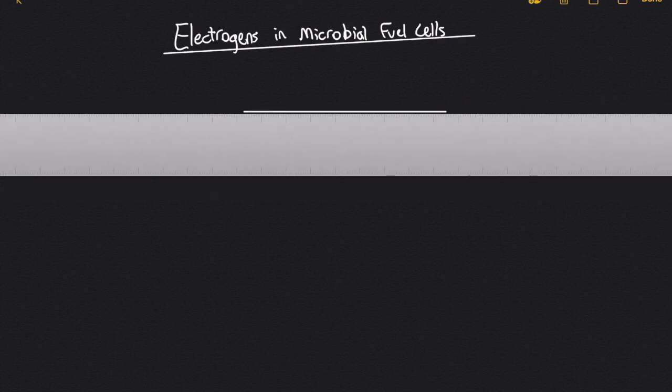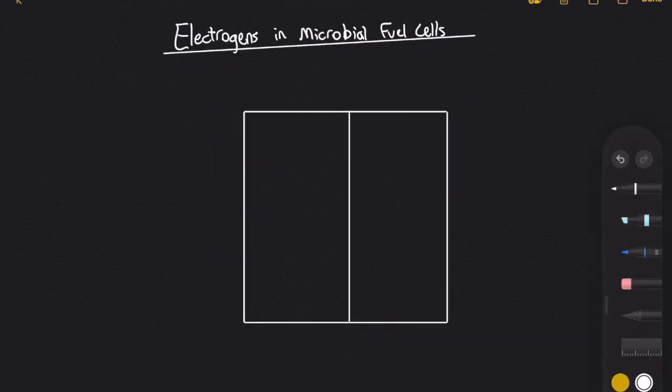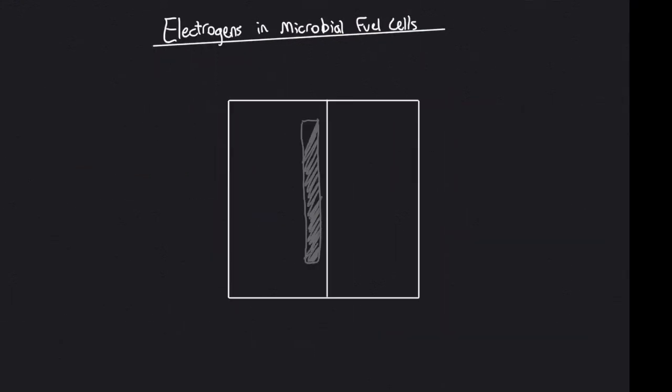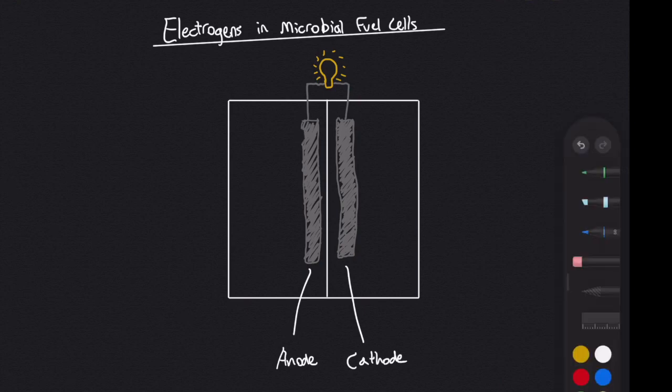A microbial fuel cell consists of two cells that are filled with water. Each cell contains an electrode, and the two electrodes are electrically connected with a load in between them. One cell contains the anode and the bacteria culture, including electrogens, and is not exposed to air. The other cell is exposed to air.